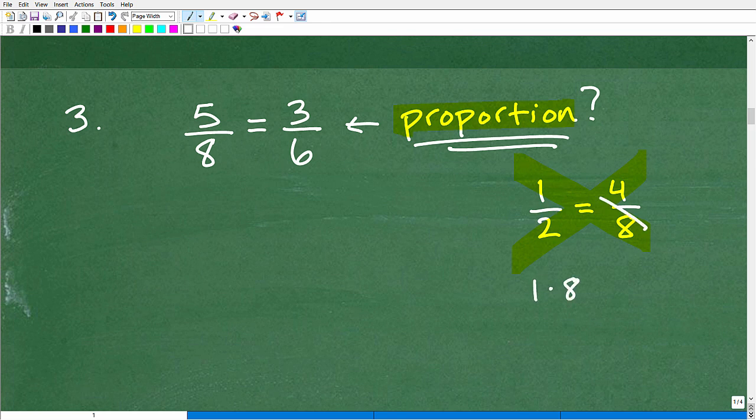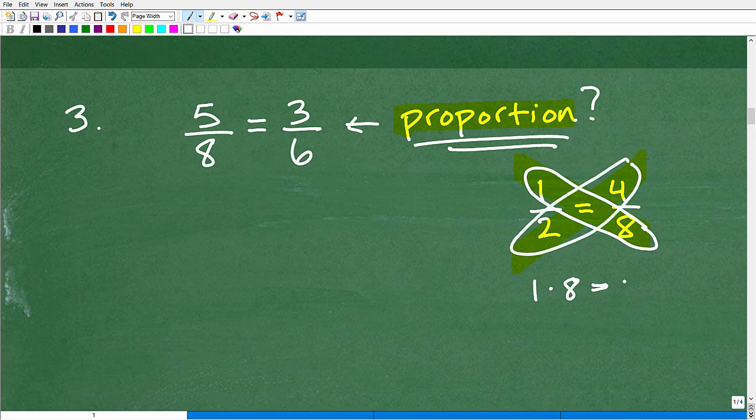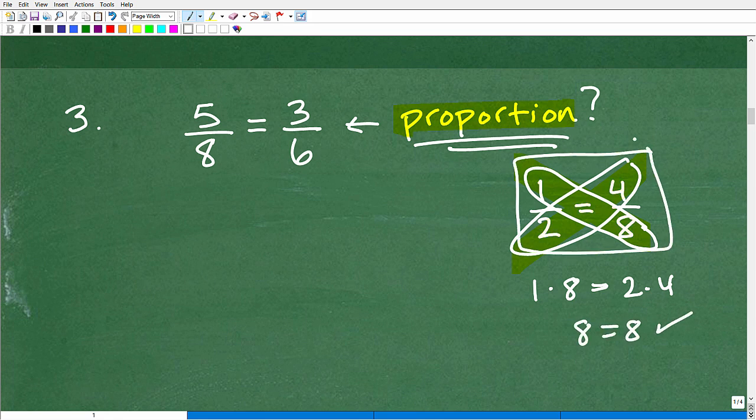Okay, the cross product will be true. So if I multiply crosswise like this, 1 times 8, that's going to be equal to 2 times 4. All right, so 8 is equal to 8. That's true. So in a proportion, the cross product is true.